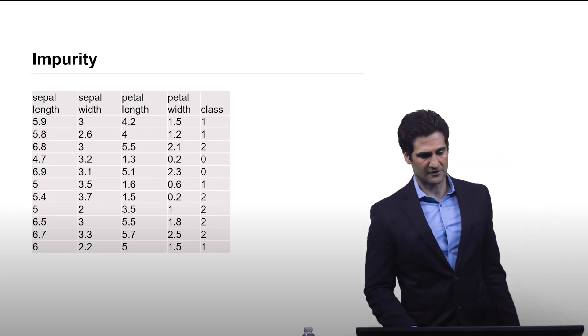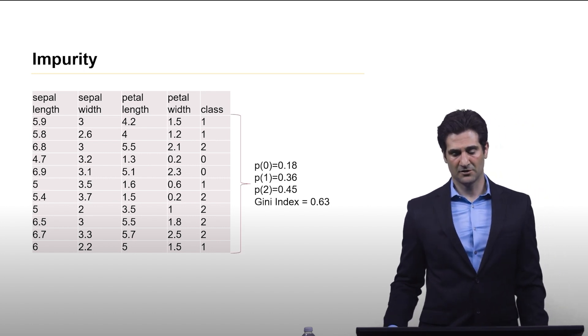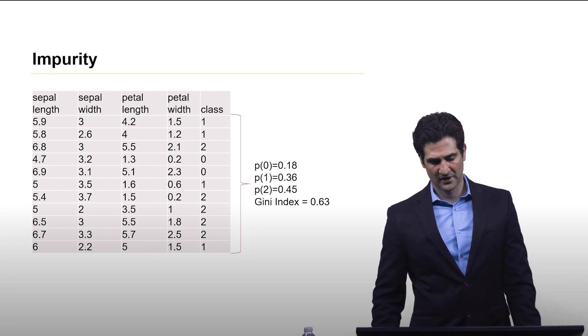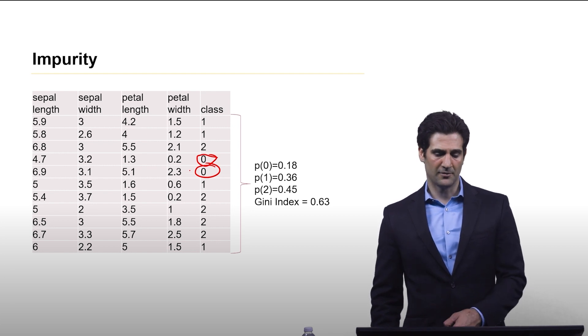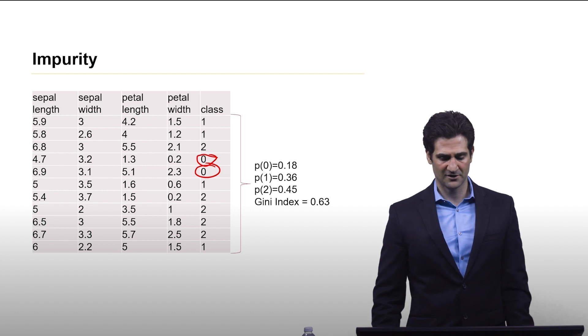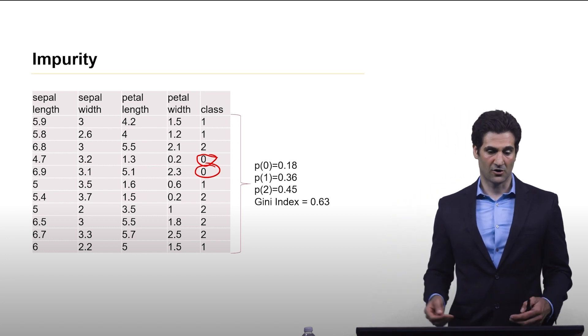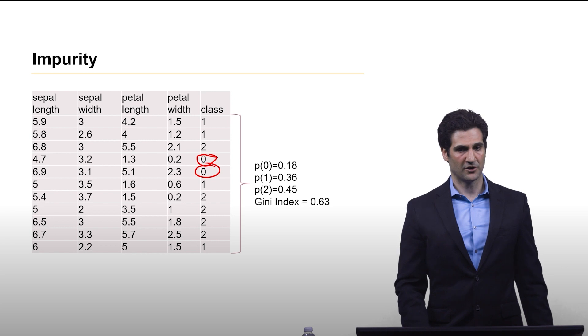So here is the Iris data set. We have the feature measurements and the classes. And we can easily compute. There's 11 samples here. And, for example, we have 2 in class 0. So probability of being in class 0 is 0.18, which is 2 over 11. And you can compute the probability of classes 1 and 2 likewise. And using the formula I showed on the previous slide, the Gini index comes out to be 0.63.